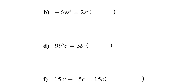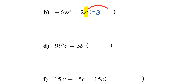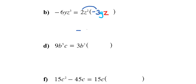For letter B, I have 2z²y and need 2 times something to equal -6yz³. 2 times what gives -6? That's -3. Then z² times what gives z³? That's a single z. And we also have a y, so the answer is -3yz. To check: 2 times -3 is -6, the y remains, and z² times z is z³, which matches.